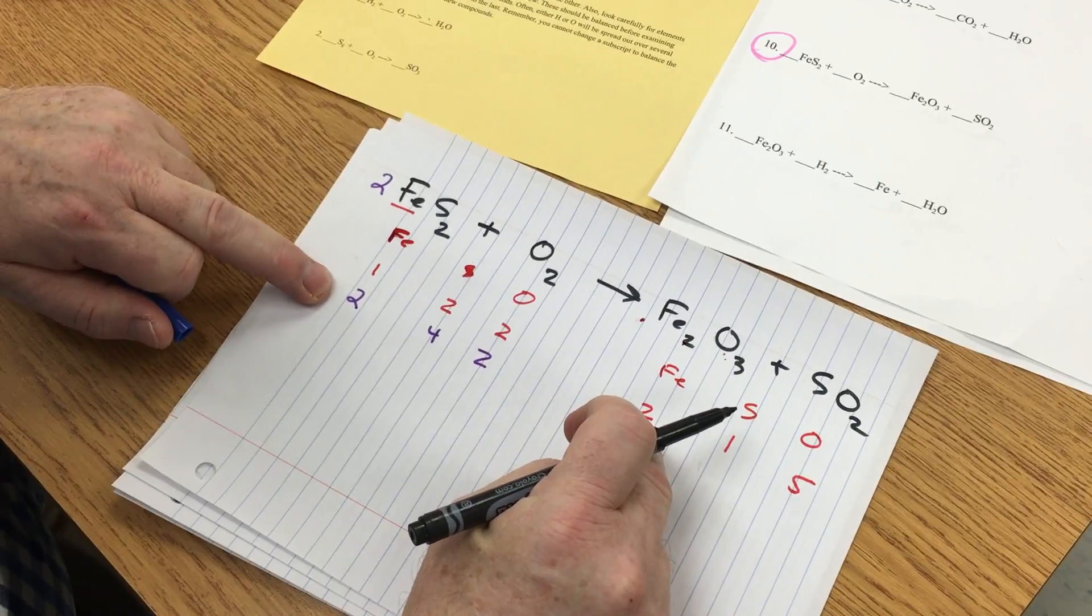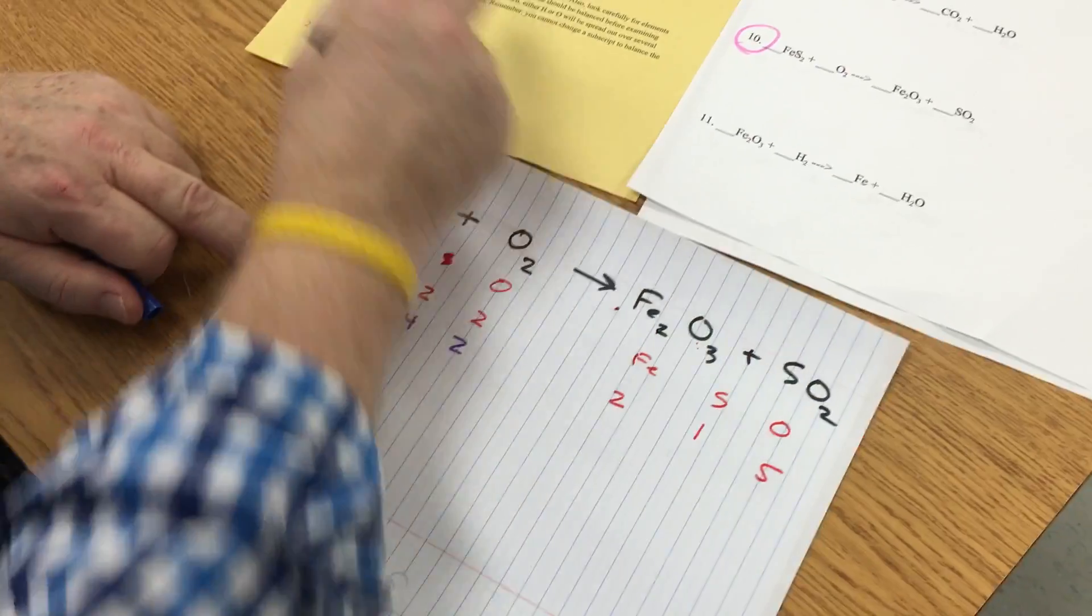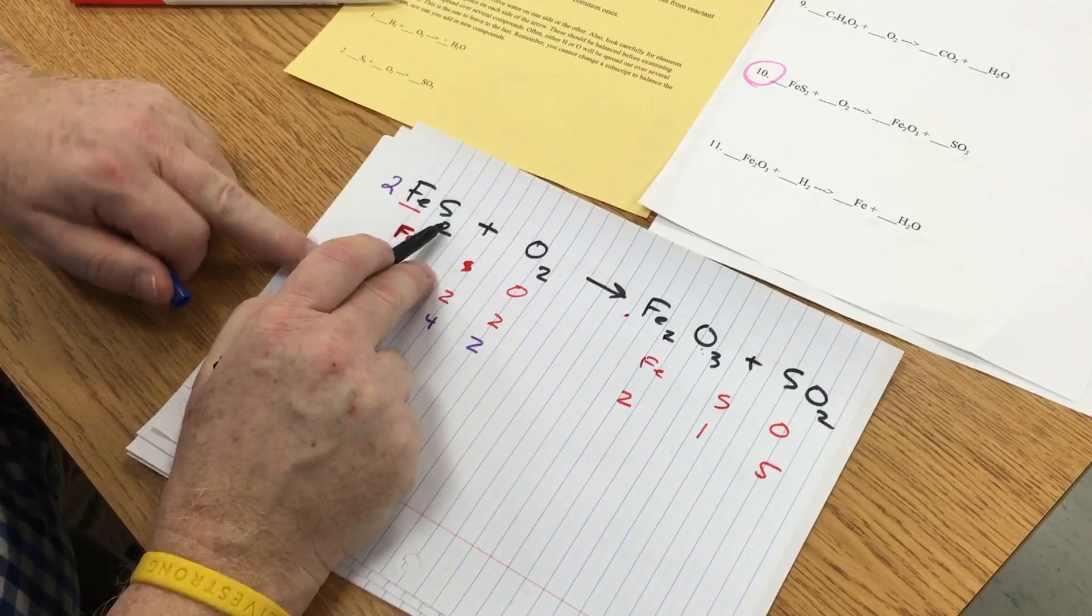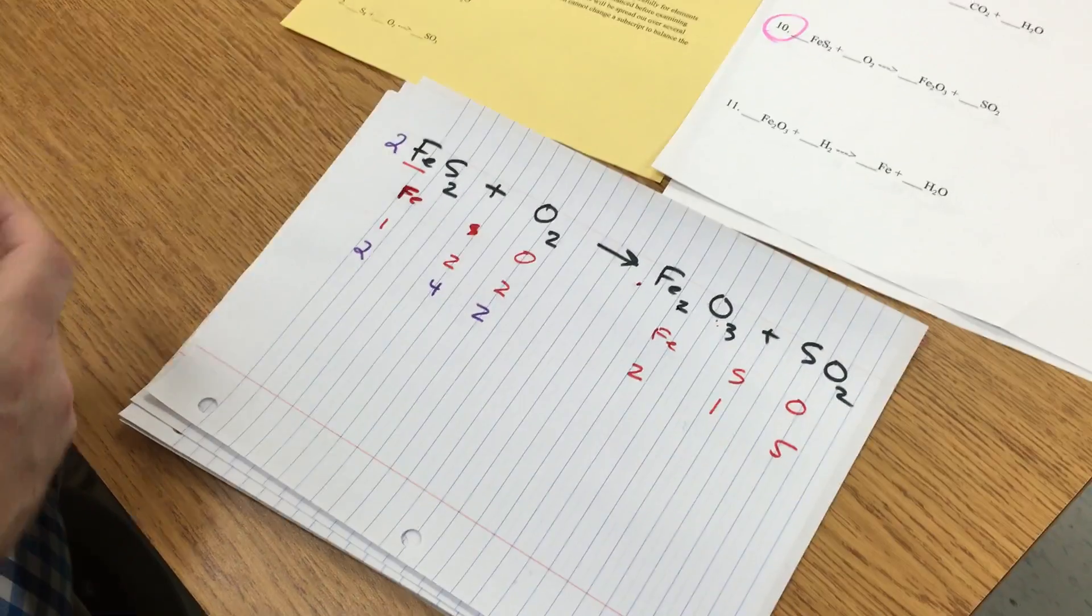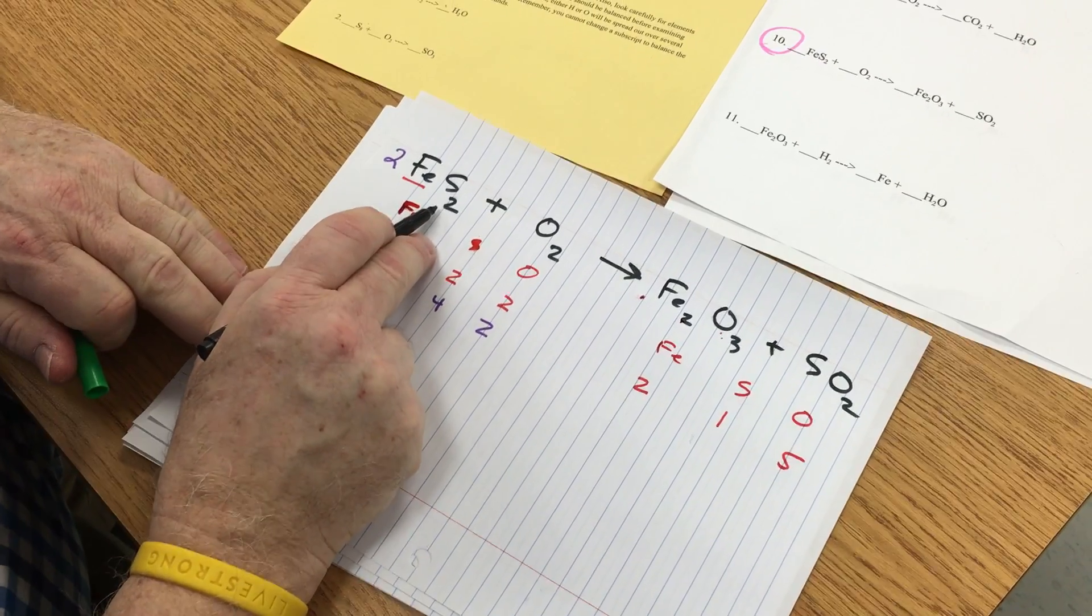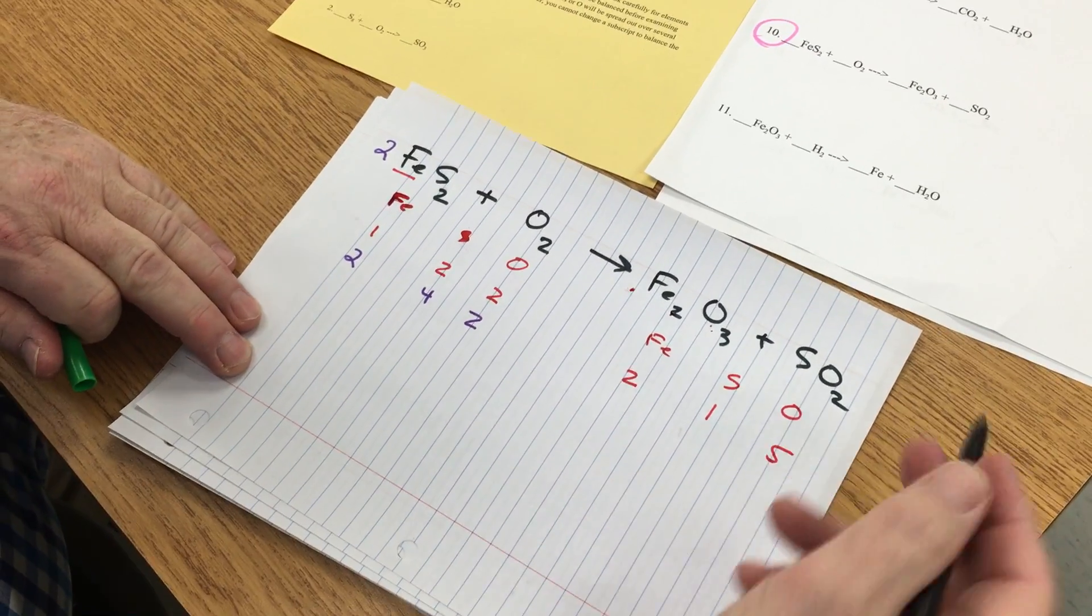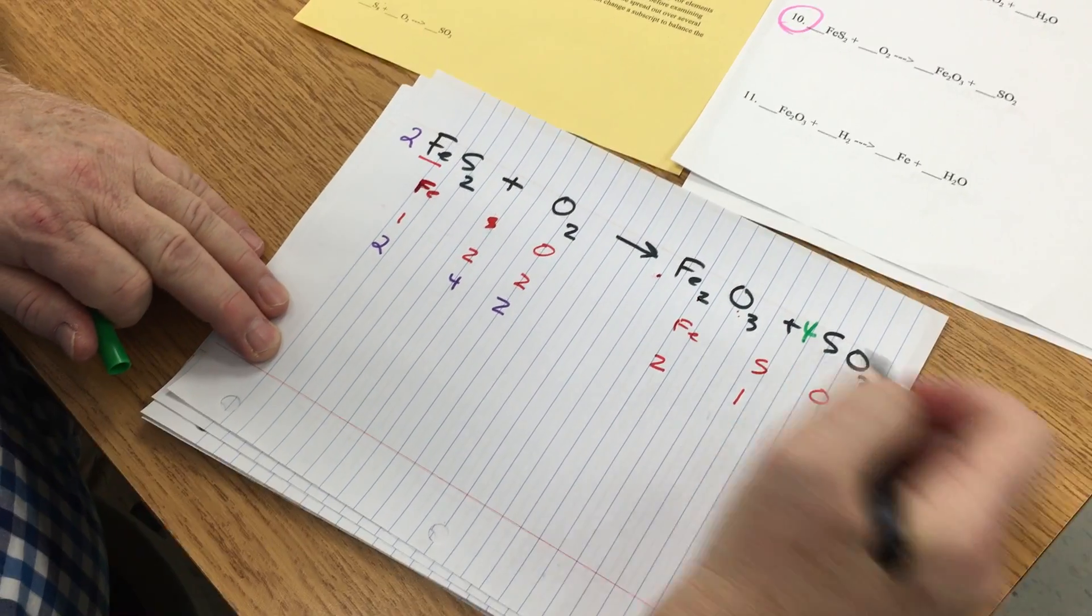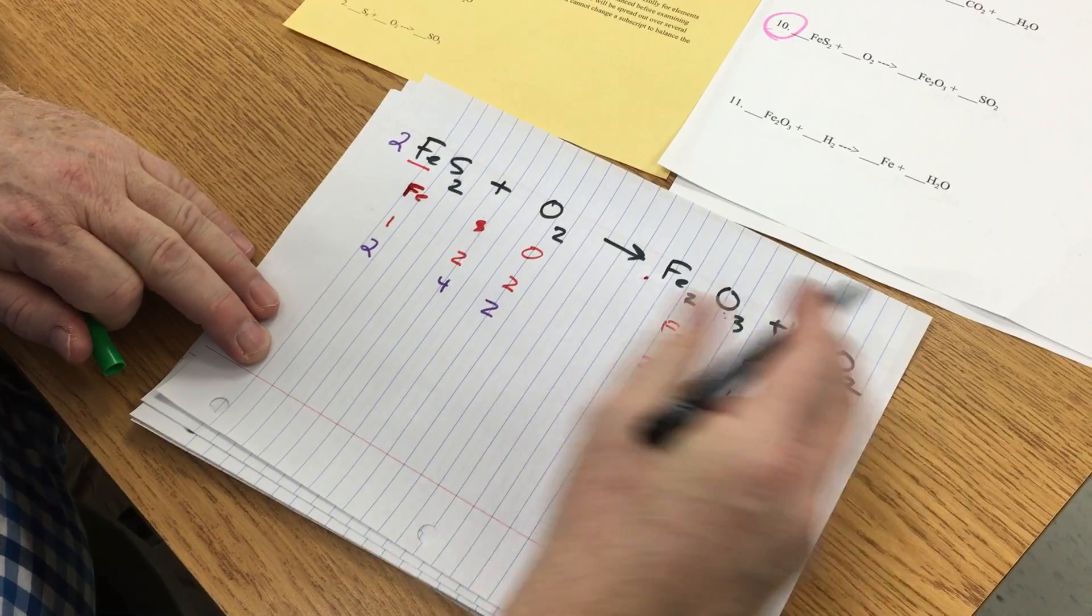Okay, so I don't have any ions that I need to worry about, but I do have a nonmetal which is sulfur. So I'm going to balance my sulfurs. I have four sulfurs here, so I need four sulfurs here. So I'm going to put a coefficient of four before the sulfur.